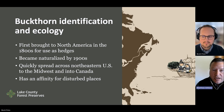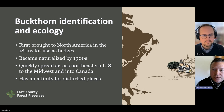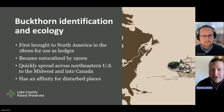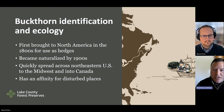Buckthorn first came to North America, presumably in the early 1800s. A lot of the reason for bringing it here was for creating hedges or recreating landscapes people were familiar with in Europe. It unfortunately became naturalized in the early 1900s, meaning it was escaping cultivation and spreading on its own. It has quickly spread across the Northeastern United States, the Midwest, and even into parts of Canada. It has an affinity for disturbed places — agriculture, development, road-making, and habitat fragmentation all seem to create the edges that buckthorn takes hold of.